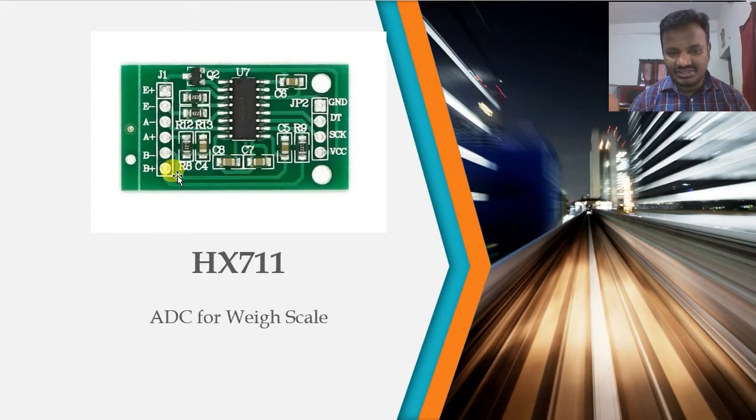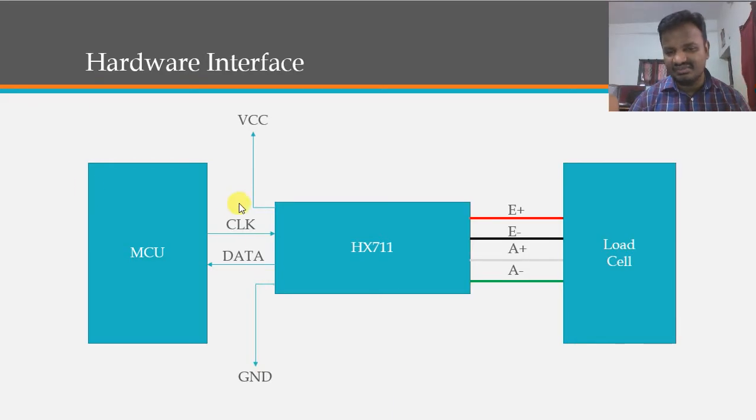In the module you can find something like E+, C-, A-, A+. It can be interfaced with the load cell with a single channel, and then we will be getting data, clock, VCC, and ground. Similarly, this should be interfaced with the MCU.